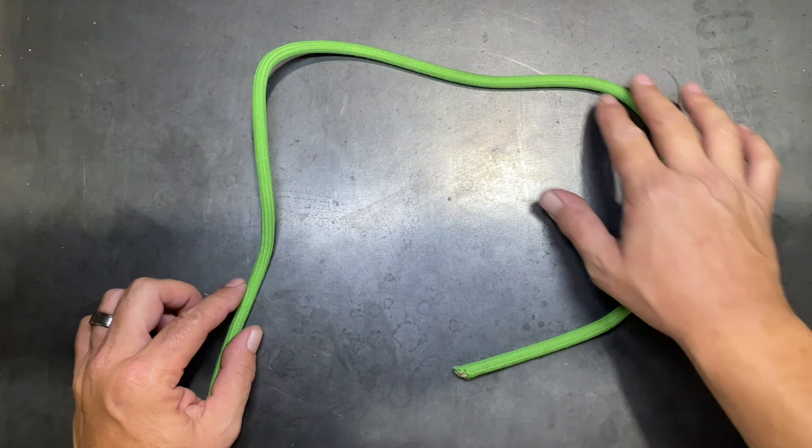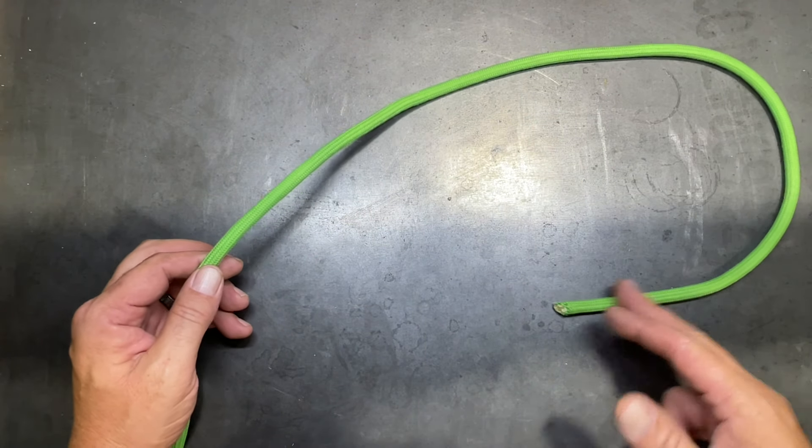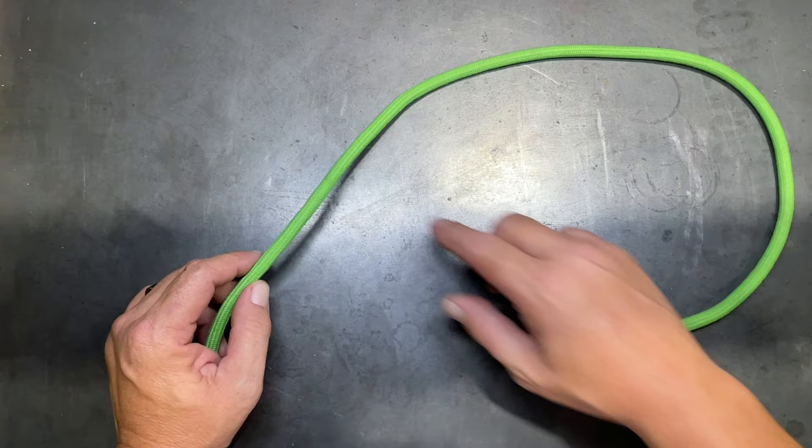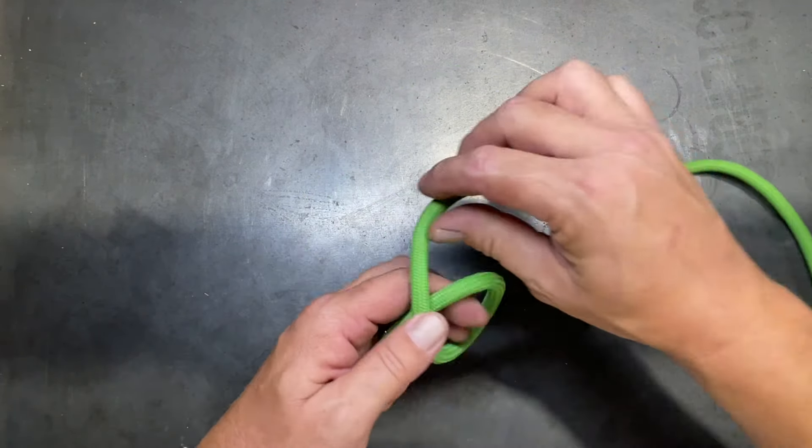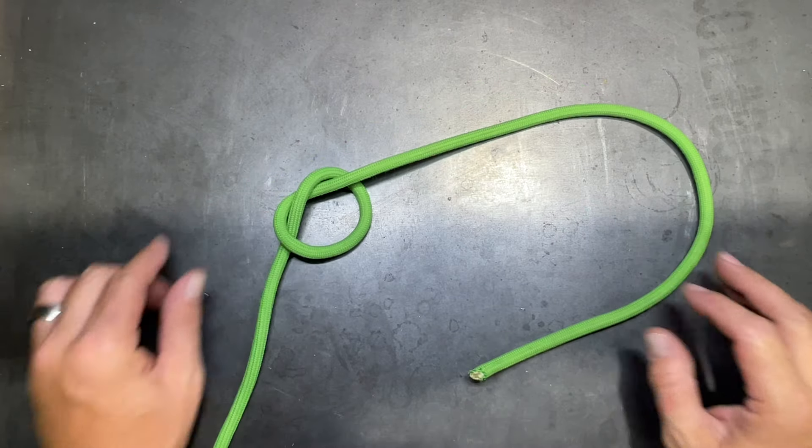The first thing we want to do is come down our rope to determine distance, whatever you want the size of your loop to be. Usually, if you want kind of a small loop, you go down about 20 to 24 inches down the line.